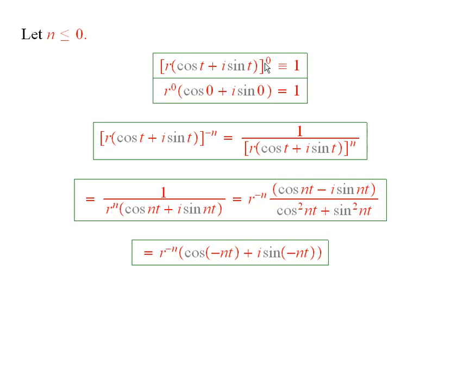On the other hand, if you use the formula, you'd have r to the 0, which is 1, cosine of 0 is 1, sine of 0 is 0, so you still get 1. So it works if n is 0.